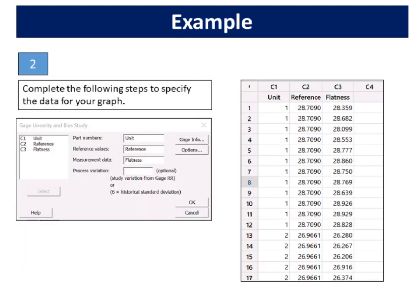Complete the following steps to specify the data for your graph. In part numbers, enter part. In reference values, enter reference. In measurement data, enter flatness. Click OK.